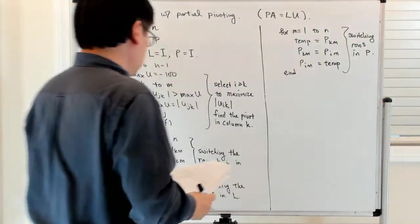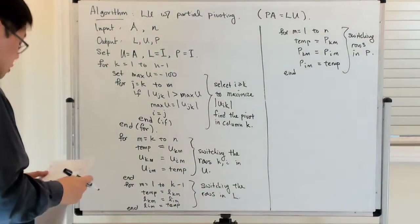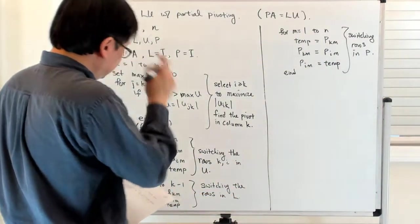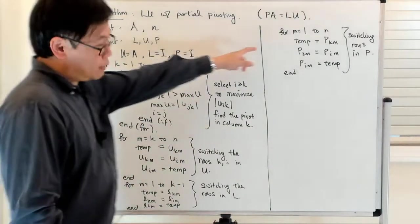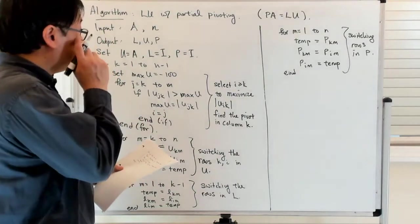TEMP equals P(K,M), P(K,M) equals P(I,M), then P(I,M) equals TEMP, then end. This is switching the rows in P. So there's a lot of swapping out the rows in the appropriate locations.